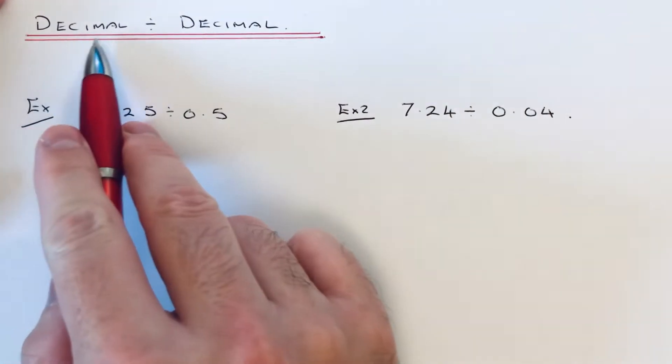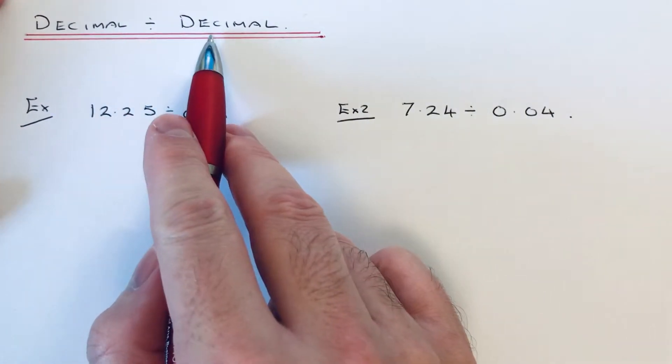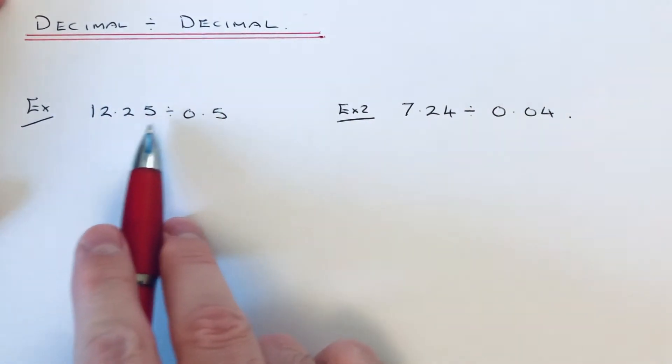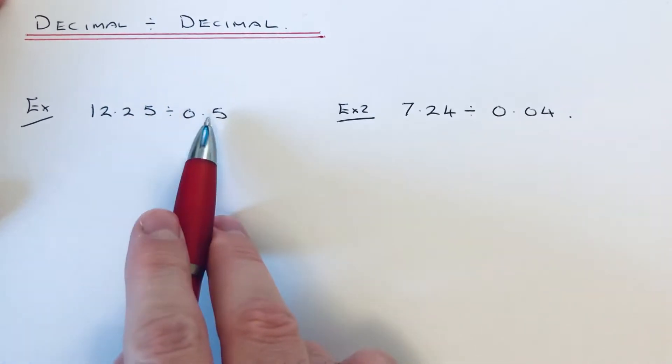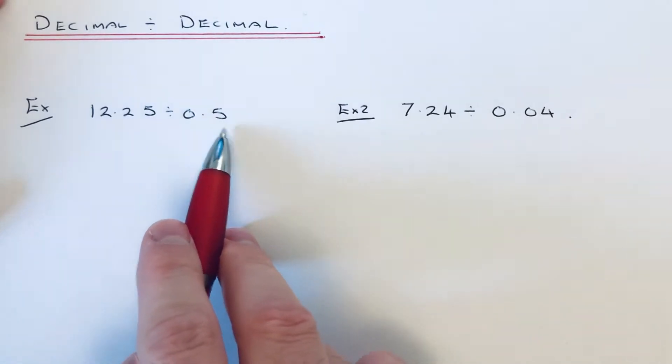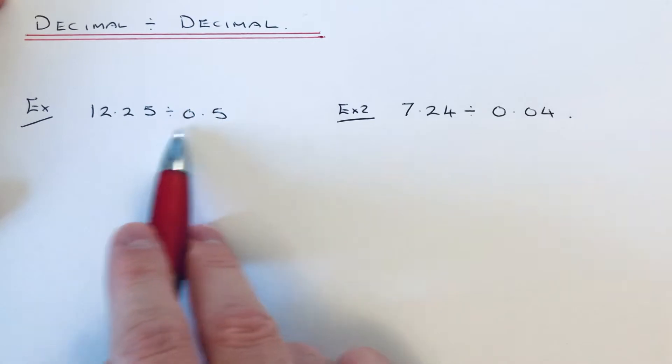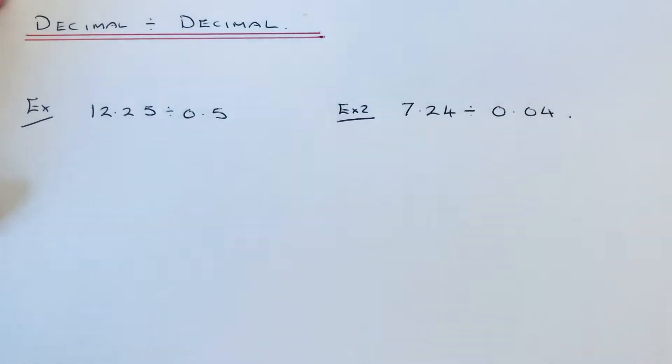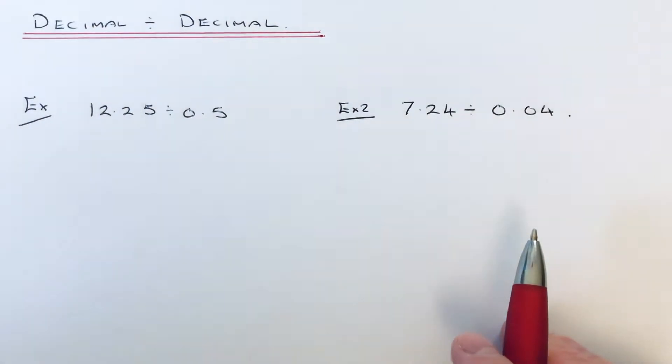Today I'm going to show you how to divide a decimal by another decimal. To do this, we need to multiply both numbers in our question by either 10, 100, or 1000 to get rid of the decimal on the second number. Once you've done that, you can carry out short division to work out the division.